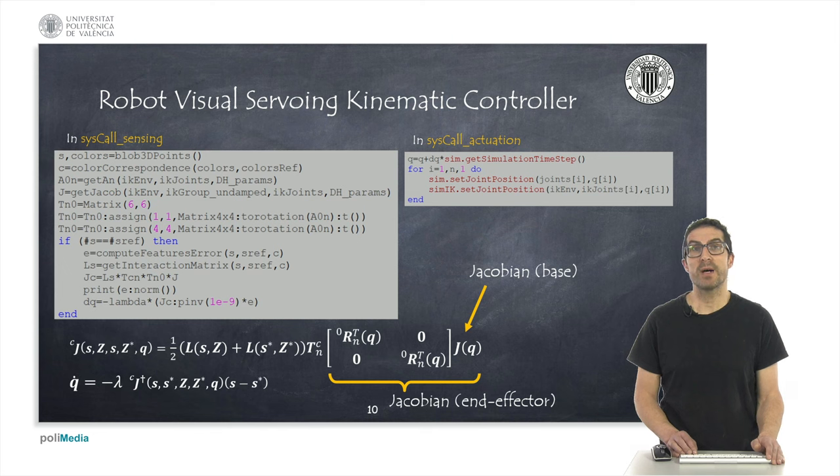The interaction matrix is computed from measurement features and reference features. The result of all these calculations is the jacobian matrix that represents the variation of the position of features in the image planes as a consequence of variations of the joints.